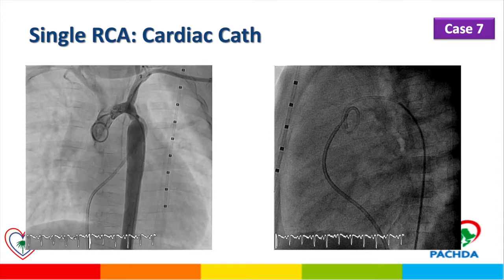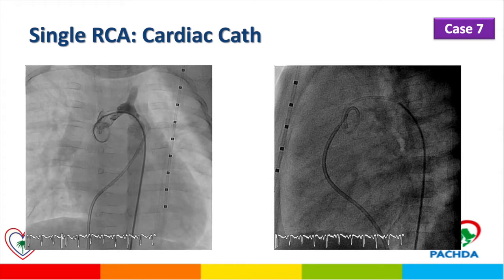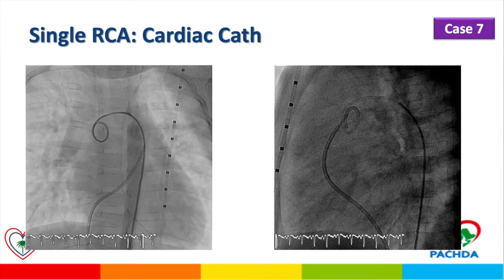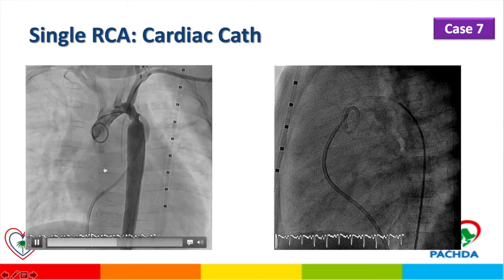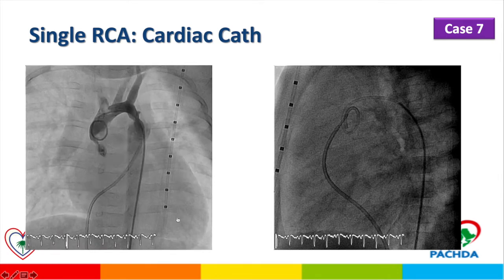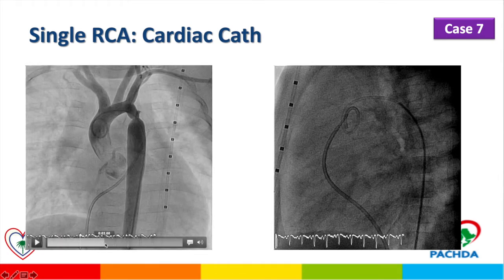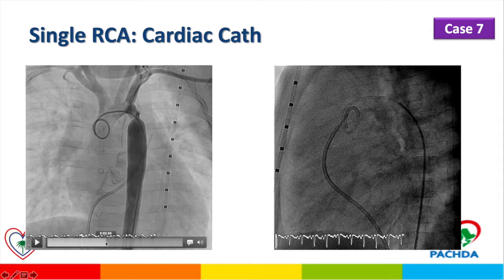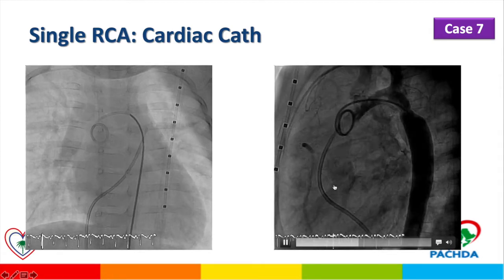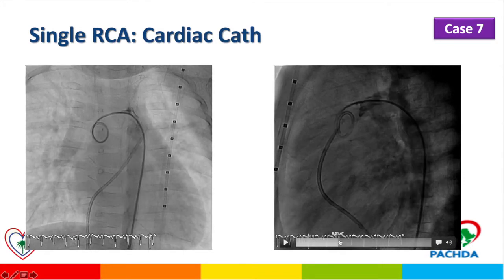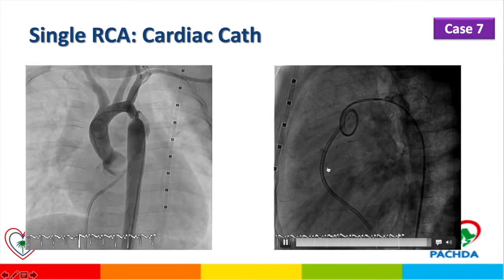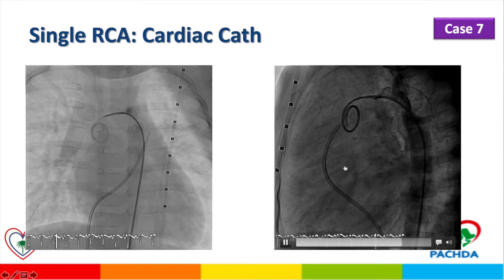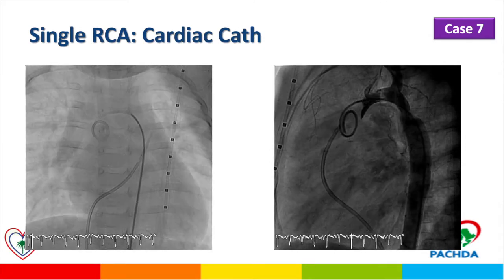This patient presented with coarctation of the aorta. When we took the patient for cardiac catheterization as treatment for his coarctation, we did an angiogram to look at the ascending aorta and coronary artery abnormalities. At the beginning of the injection, the right coronary artery and left coronary artery are coming from the same side. The lateral imaging confirms that the right and left coronary arteries are coming from one origin. So this patient has a single right coronary artery in addition to his coarctation of the aorta.